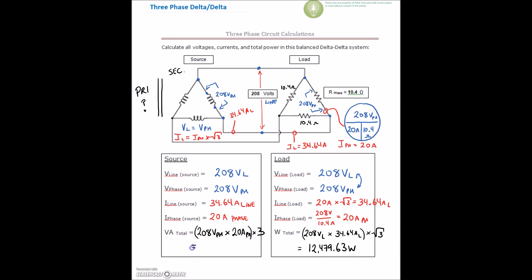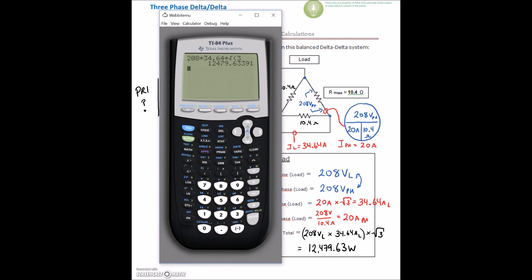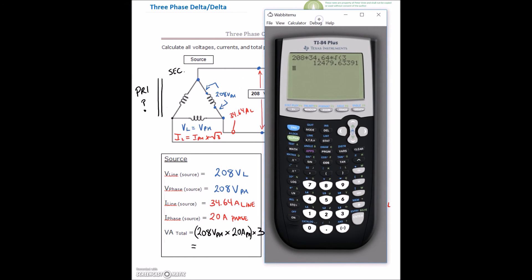And we should find that that comes to a value that's very close. So that's probably going to be 12,480. Let's check. So we've got 208 volts. We're going to multiply that by 20 amps on the phase. Then we've got three phases, and we've got 12,480.